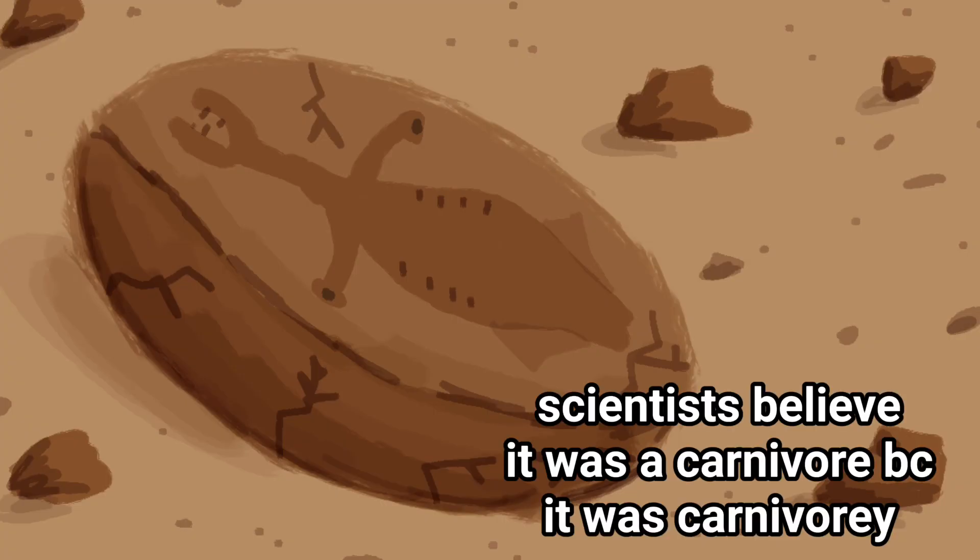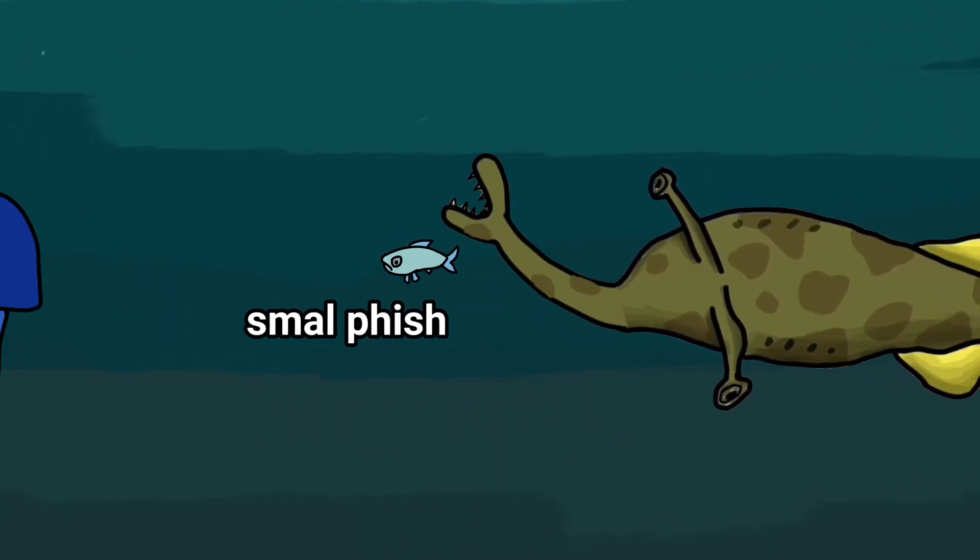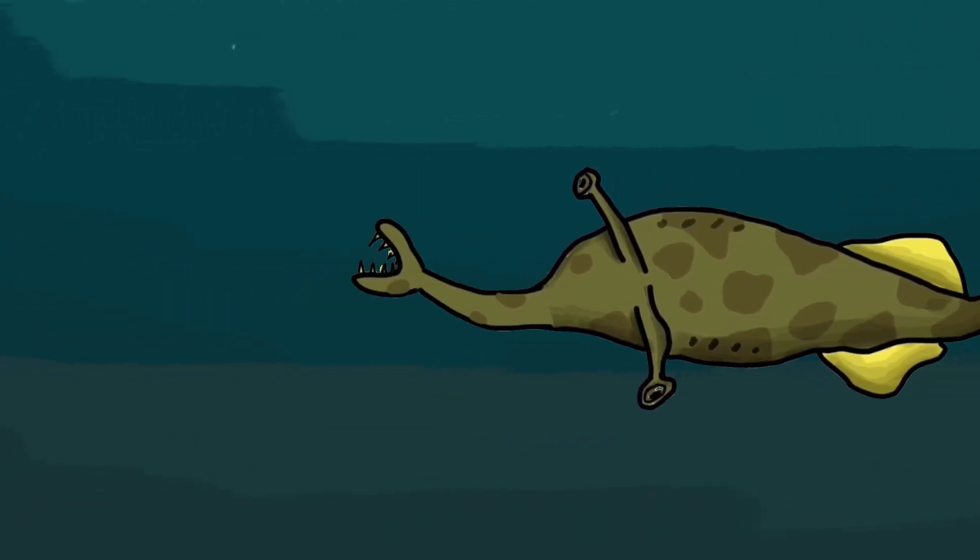Based on fossil evidence, the Tully Monster is believed to have been a carnivore. Feeding on stuff like shrimp, small fish, and jellyfish. By using its horrific mouth arm.